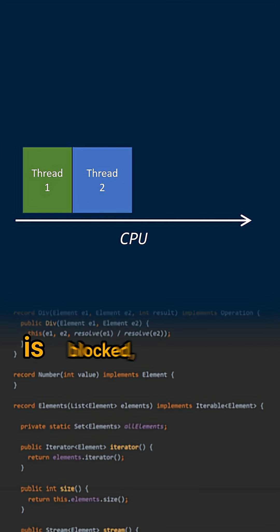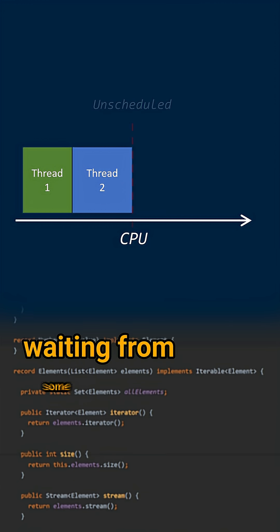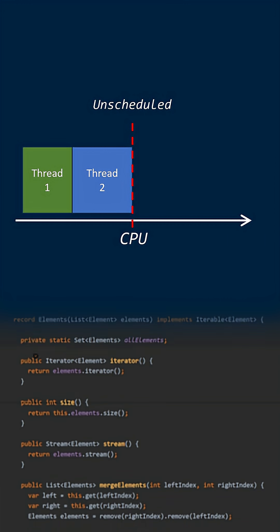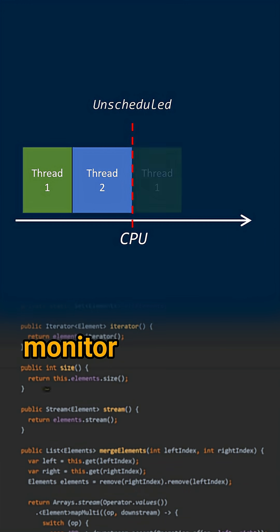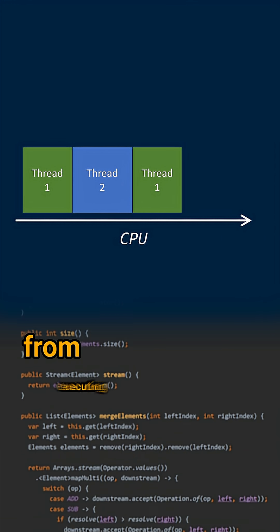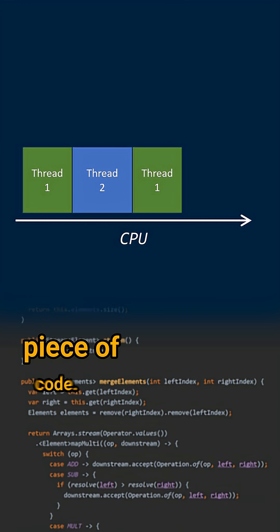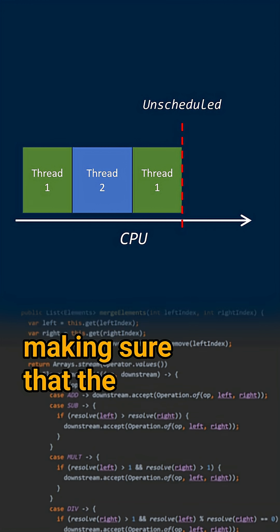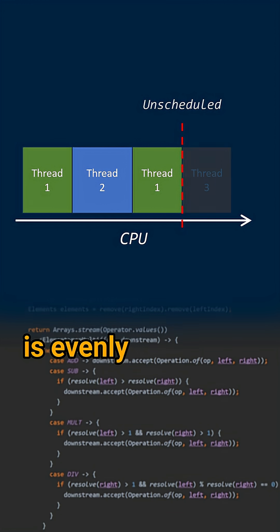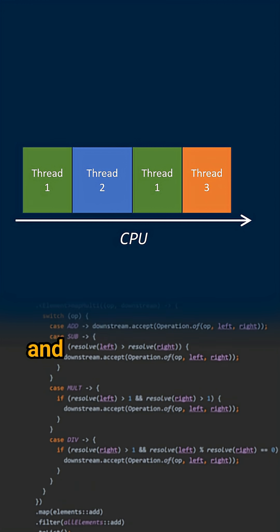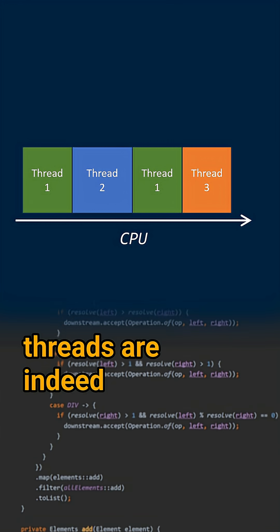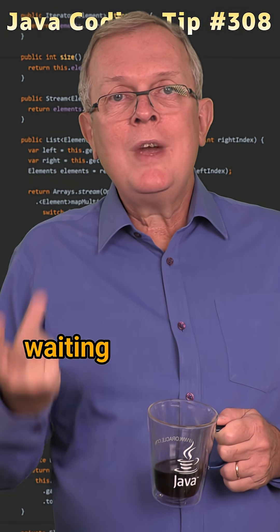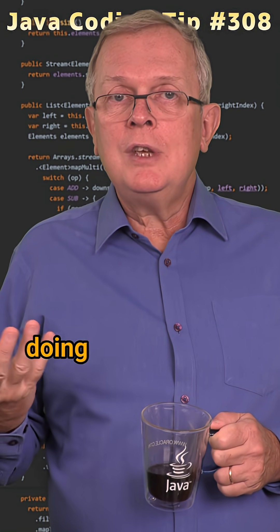should happen if this thread is blocked — for instance, waiting for some data coming from the disk or the network, or waiting for some monitor that is preventing it from executing a synchronized piece of code. That is the role of the thread scheduler: making sure that the CPU resource is evenly shared among threads, and that the active threads are indeed using the CPU resource and not waiting on the CPU doing nothing.